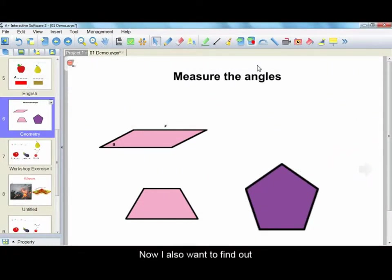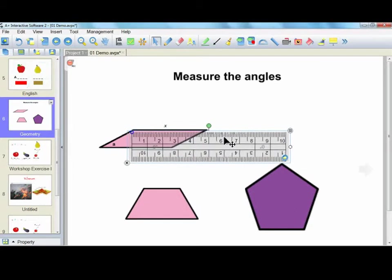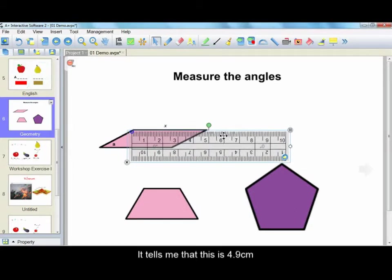Now, I also want to find out the length of the side X, so I call up the ruler. It tells me that this is 4.9 cm. Same with the protractor tool, I can drag this blue circle to draw the line, and then reproduce it.